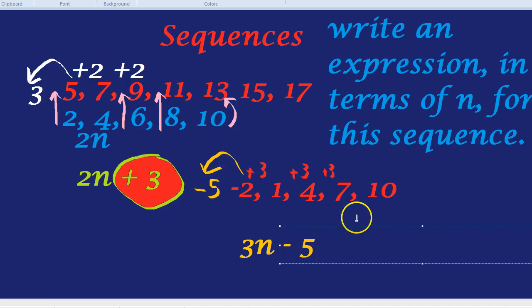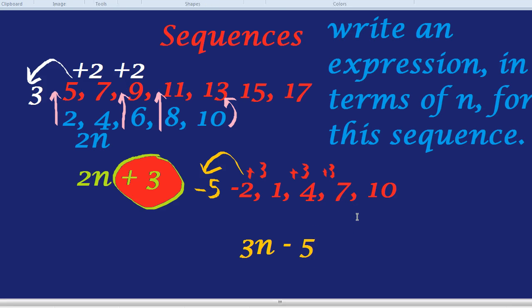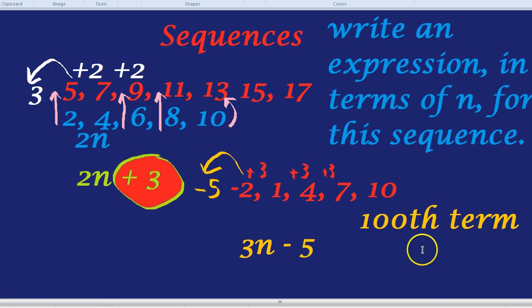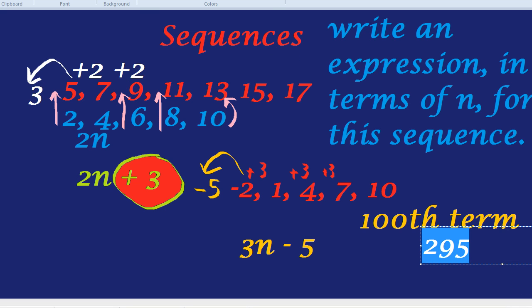But wait, I have another question for you. What would the 100th term of this sequence be? And please don't tell me that you're tempted to go up 3 each time. That would take forever. What's the 100th term? We simply replace the n with 100 to get the 100th term. So, 3 times 100 is 300. Take away 5 is 295. So the 100th term in the sequence, instantly, 295.